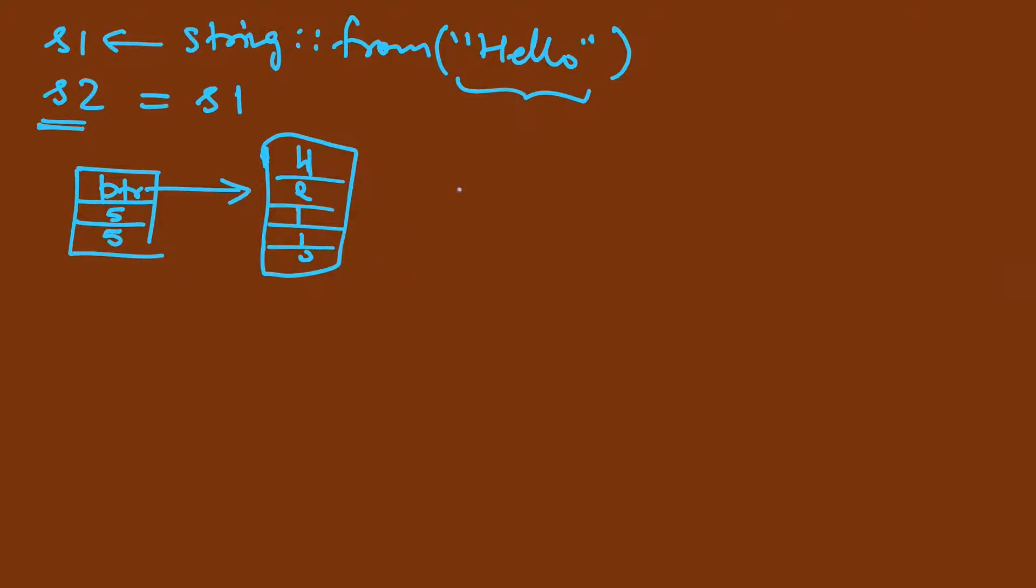When we did s2 equal to s1, then the stack data was copied. So this part of data was in the stack and this is in heap, and s2 was also pointing to the same memory in the heap.